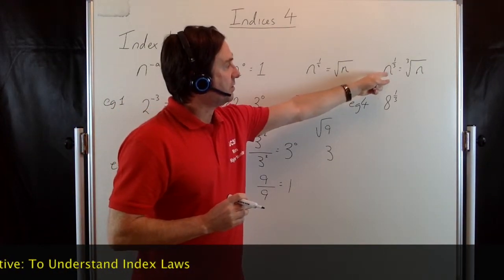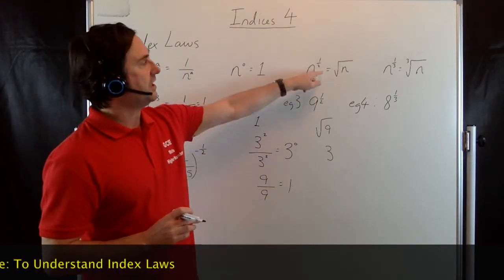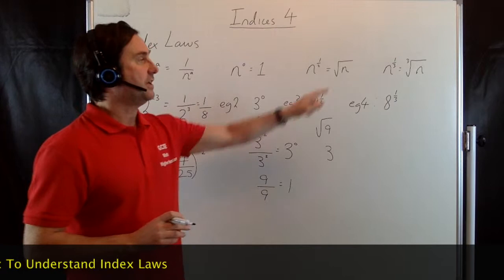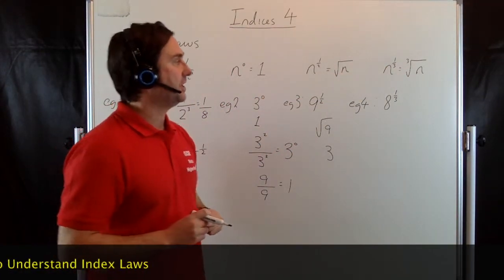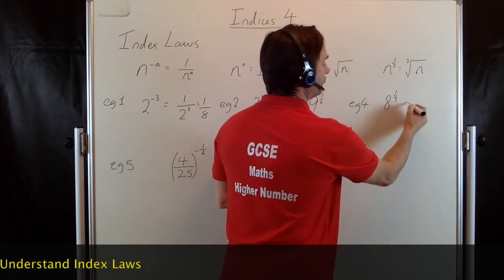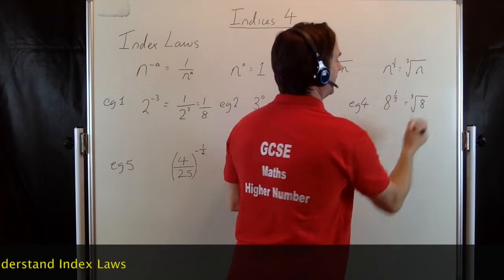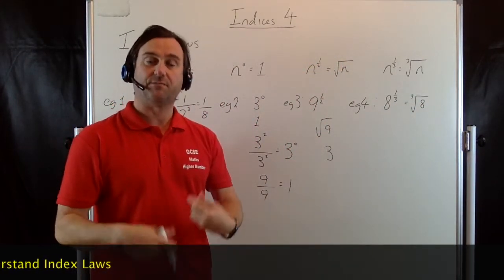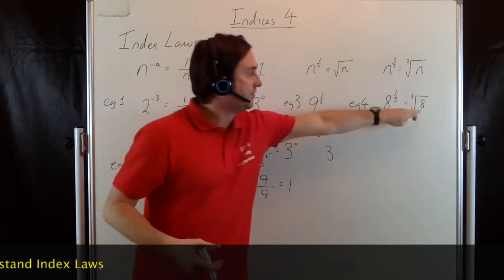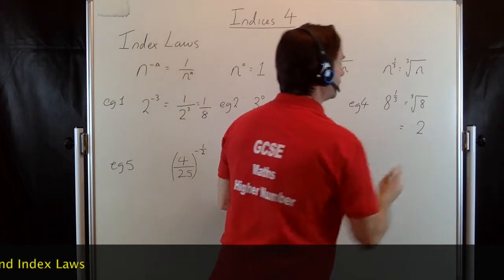Same way that this works here: if you've got n to the third, whereas it was n to the half was the square root, then n to the third becomes the cube root. So if I've got 8 to the third here, if we write that in its root form, it's going to become the cube root of 8. Now the cube root of a number is the number times by itself, by itself again to give you this answer. The answer to that is going to be 2.